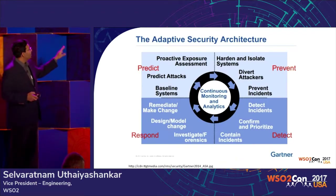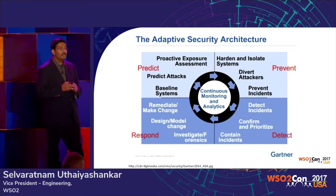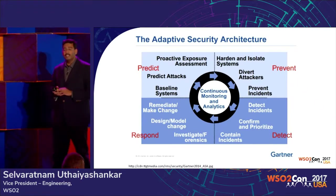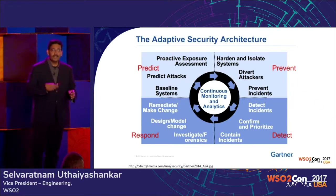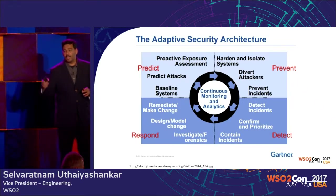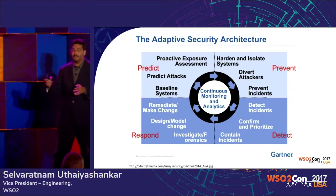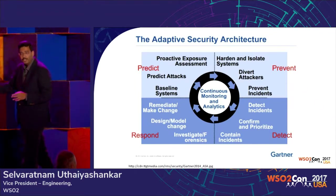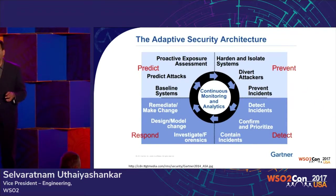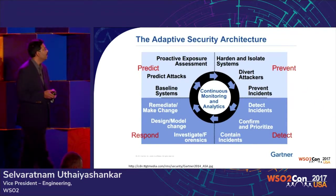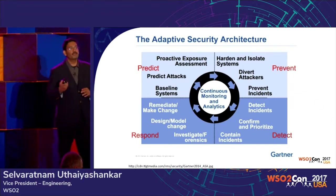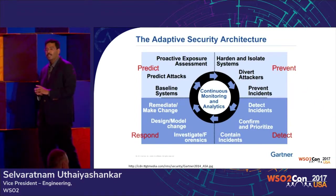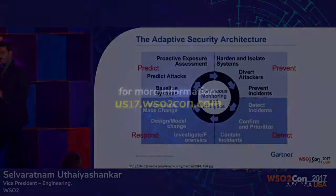The second picture is about adaptive security architecture. In your digital business, your security architecture is not a fixed architecture — it is an iterative architecture. You have to predict, prevent, detect, and respond, and then go through a cycle iteratively to identify threats and improve your security posture.